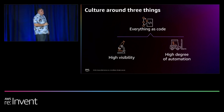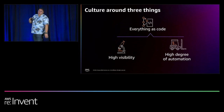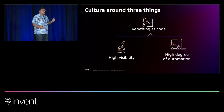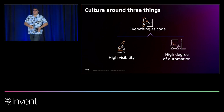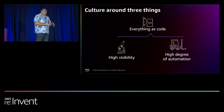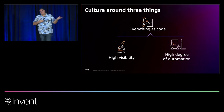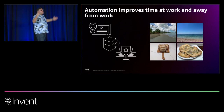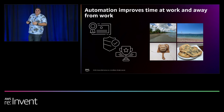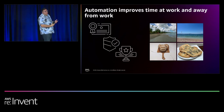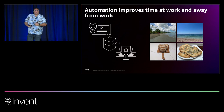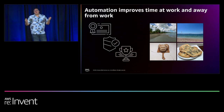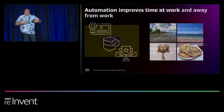From that report, elite performers create a culture revolving around three things: everything is codified, giving them high visibility into what's going on; from that visibility they can respond to incidents in an automated fashion; and they can do deployments in an automated fashion, going from code to production in an hour and easily rolling back changes. And the reason I'm wearing a Hawaiian shirt is because at the end of the day, it's about impacting not just your organization and your career, but also making sure you have that good work-life balance.